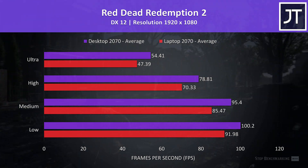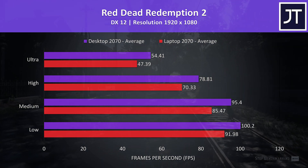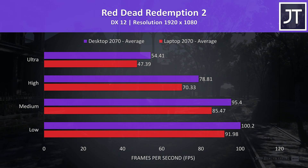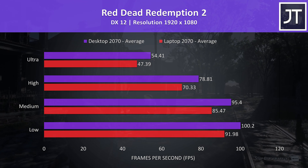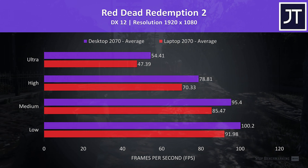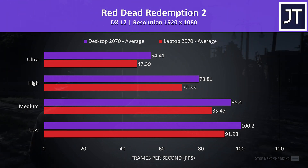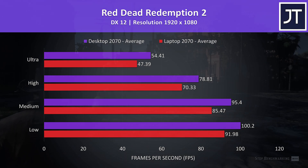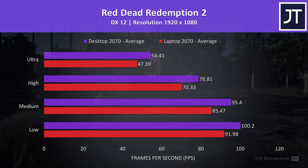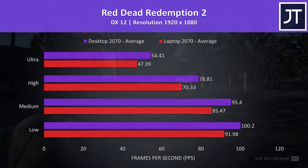Red Dead Redemption 2 was tested using the game's benchmark tool. The desktop PC is shown by the purple bars and the laptop by the red bars below. All setting presets are tested, arranged from lowest at the bottom to highest up top. As expected, the desktop was faster at all settings, with a 15% higher average frame rate at ultra settings.